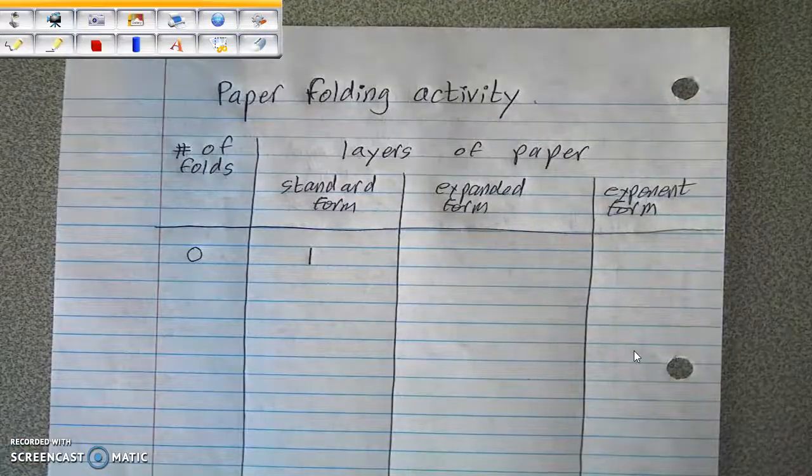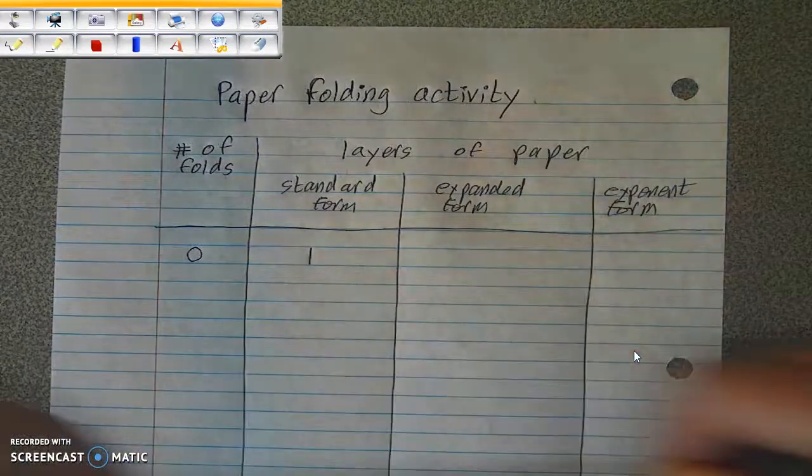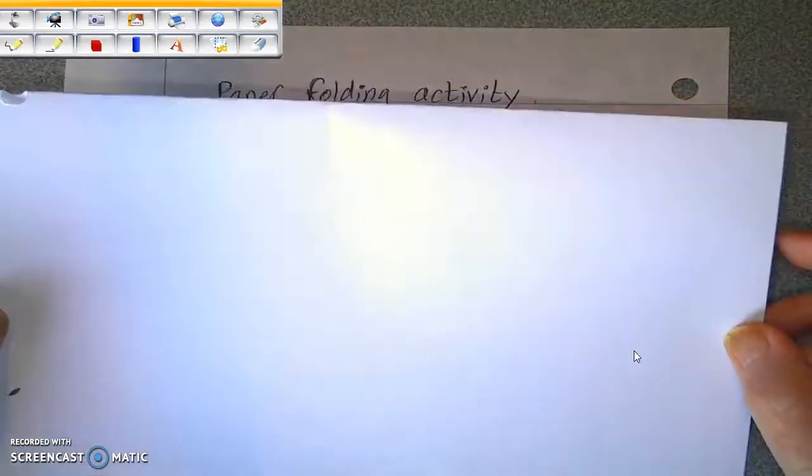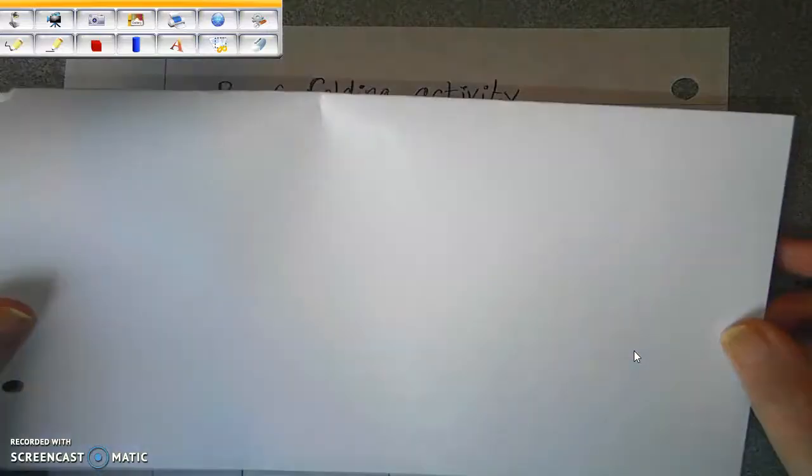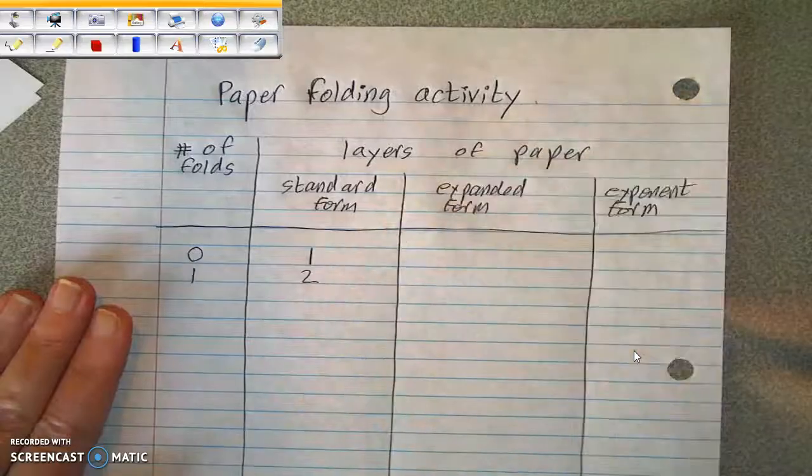Then you're going to fold the paper once. And when you fold your paper once, you have two layers of paper. So when there's one fold, you have two layers of paper.